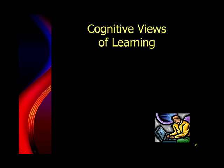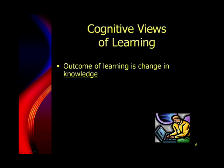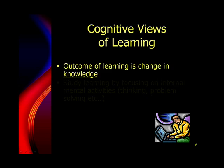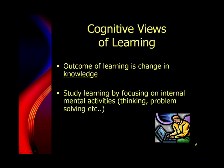Cognitive views of learning came from a whole different perspective. Theorists who wrote theories related to learning from this perspective looked at learning as a change in knowledge. So the focus was not on behavior, but on learning and how one changes their knowledge over time. The way they studied learning was by observing or making some assumptions about what went on when someone was thinking.